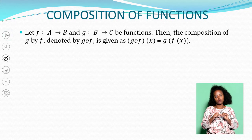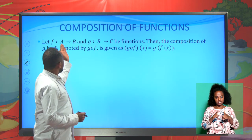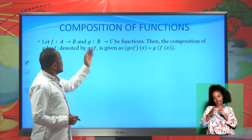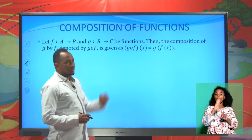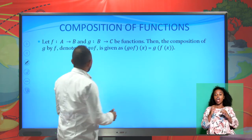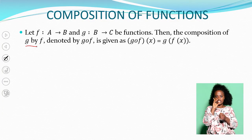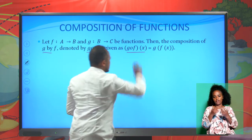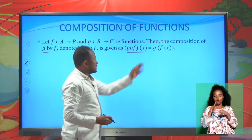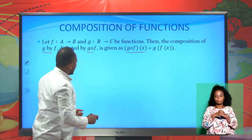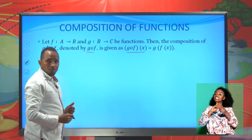Let's continue to composition functions. Let f be a function from A to B and g be a function from B to C. Then the composition g of f, written as g∘f of x or g of f of x, is defined accordingly. This is the definition of composition function.